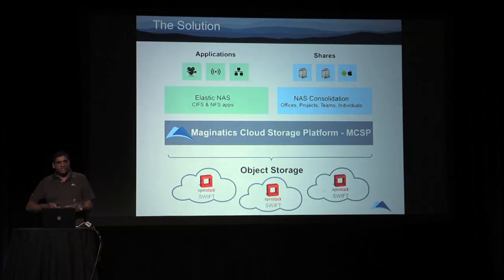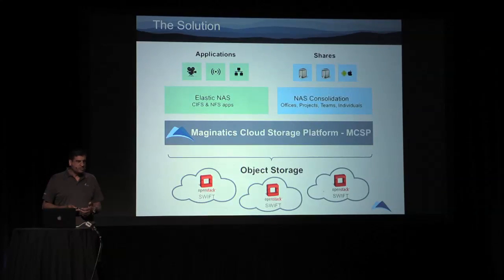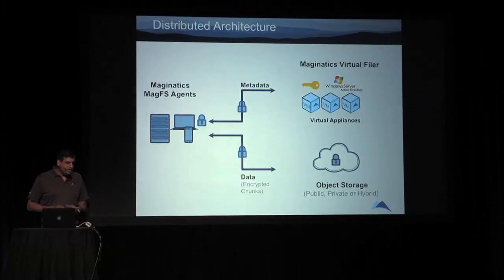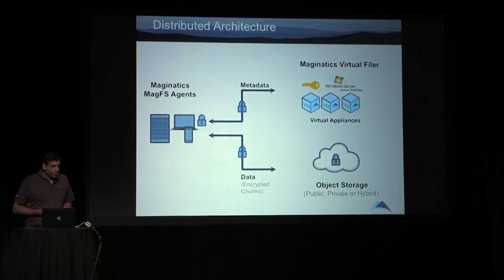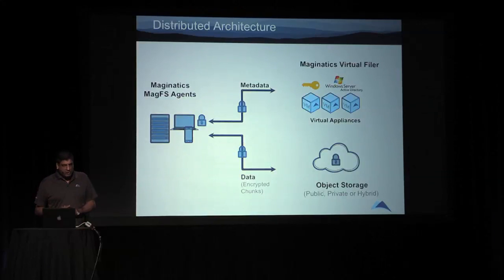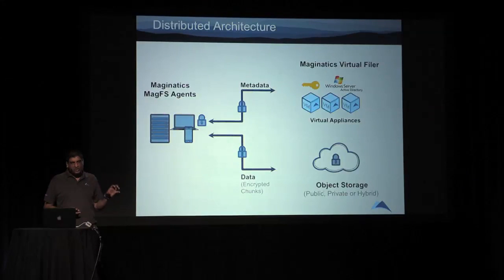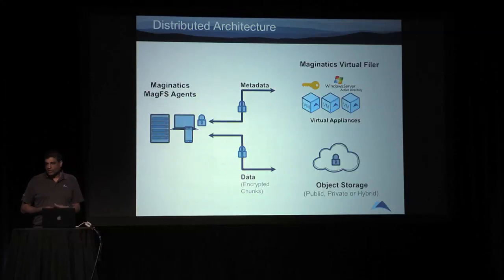How do we do this? We have a totally different architecture — not a monolithic storage platform like you see commonplace today. We've adopted a distributed architecture with three core components: our Measurenetics virtual filer, which sits in VM space; endpoint agents that do heavy lifting at the place where data is ingested and used; and finally, an object store. We don't provide the object store — we look to our customers to provide that.